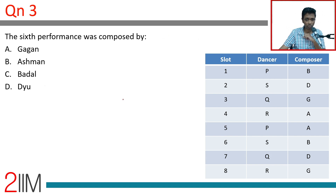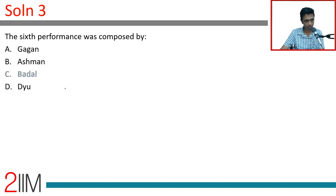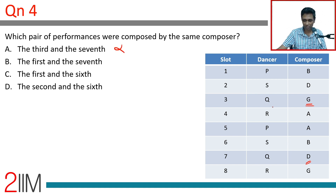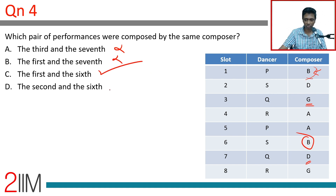The sixth performance was Samragni assigned by Badal. Which pair of performances were composed by the same composer? Third and seventh: third is Gagan, seventh is Dew — No. First and seventh: first is Badal, seventh is Dew — No. First and sixth: first is Badal, sixth is Badal — that is our answer, Choice C. First and sixth.